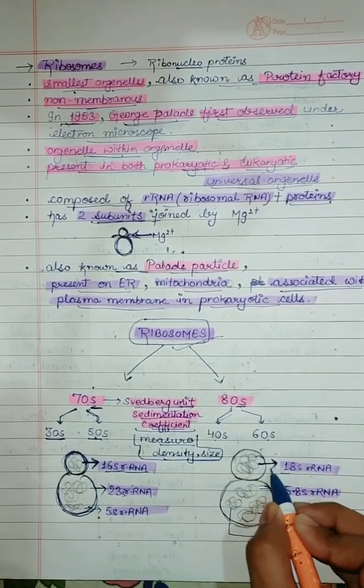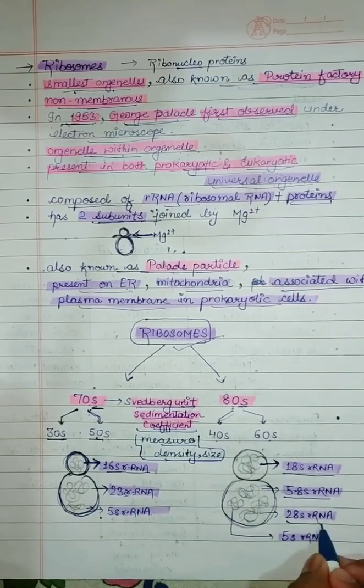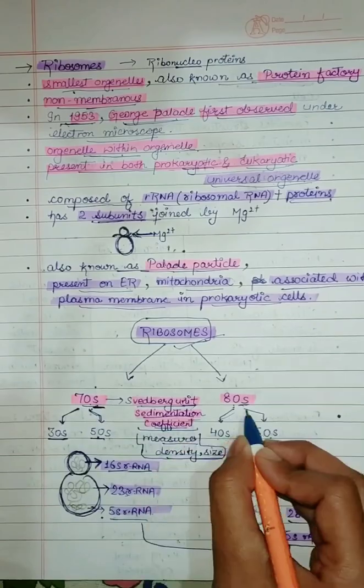In 80S ribosome, the smaller unit contains 18S rRNA and larger unit contains 5.8S rRNA, 28S rRNA, and 5S rRNA. These 5S rRNA are common between 70S and 80S.